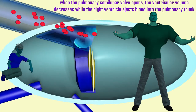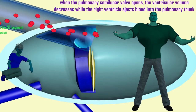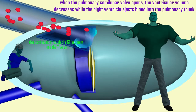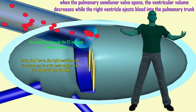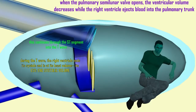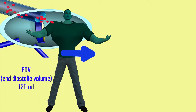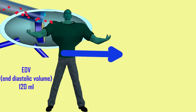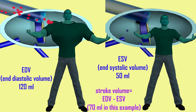A split second after the ventricles begin their systole, the semilunar valves open, which allows the right ventricle — which is full and contracting here in systole — to eject blood. As blood leaves the right ventricle into the pulmonary trunk, the volume decreases until, when systole is over, it is relatively empty, reaching its end systolic volume. The amount of blood ejected equals the end diastolic volume minus the end systolic volume — the stroke volume of about 70 milliliters.